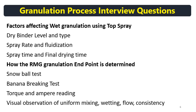How is the RMG granulation end point determined? Commonly known methods include the snowball test and banana breaking test. Scientifically, torque and amperage readings of the impeller and chopper can be used to determine the end point. End point is fixed based on development trials, scale-up, and exhibit trials, along with visual observations of uniform mixing, uniform wetting, flow of wet granules, and consistency.